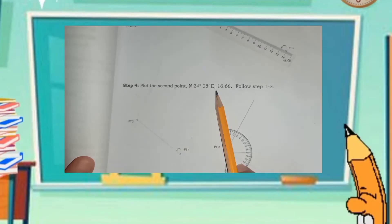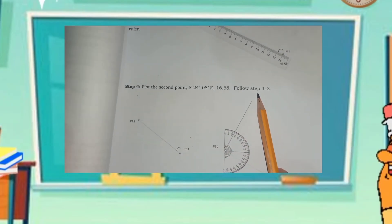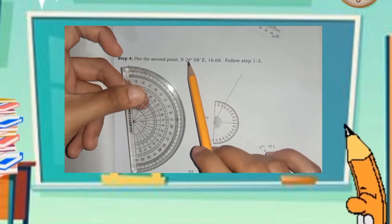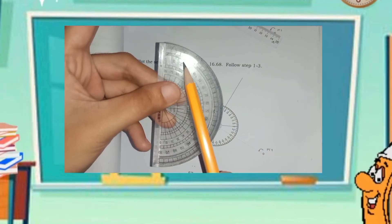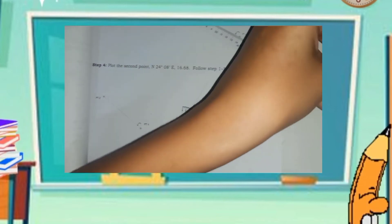Step number four, plot the second point, 24 degrees, 8 minutes north, due east. Follow the step 1 to 3. Find the 24 degrees on the protractor as shown in the video.